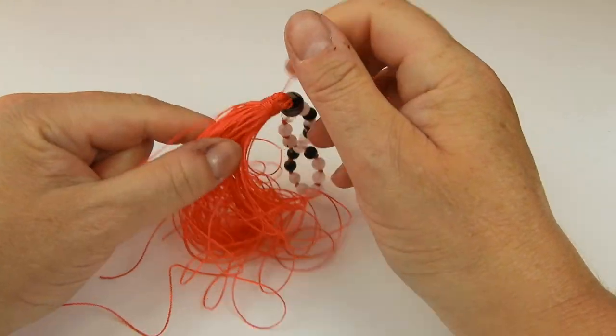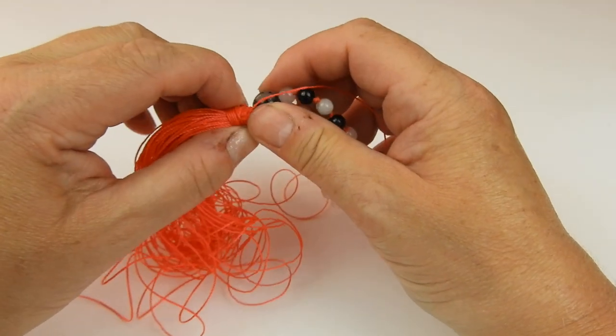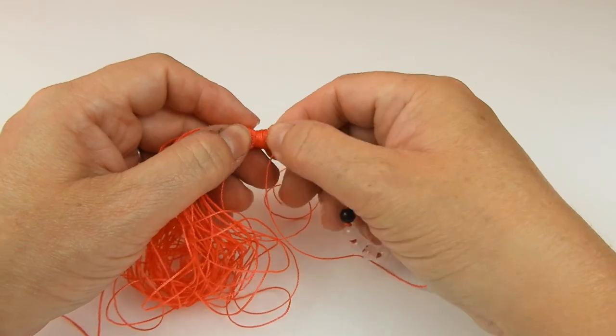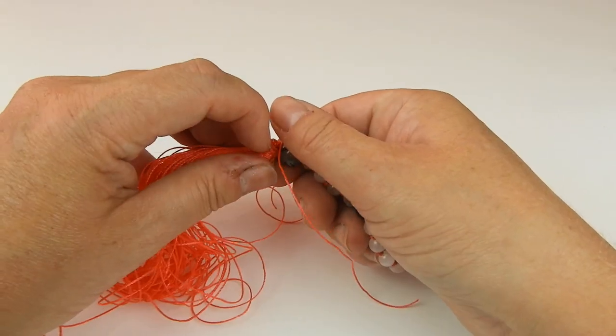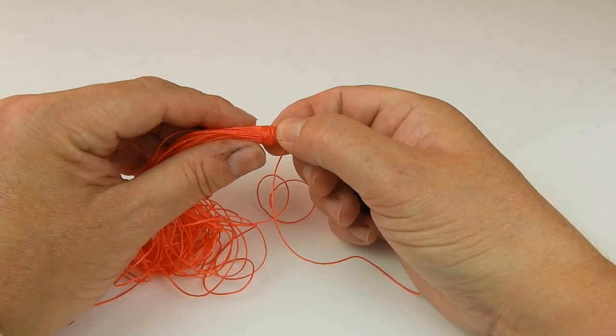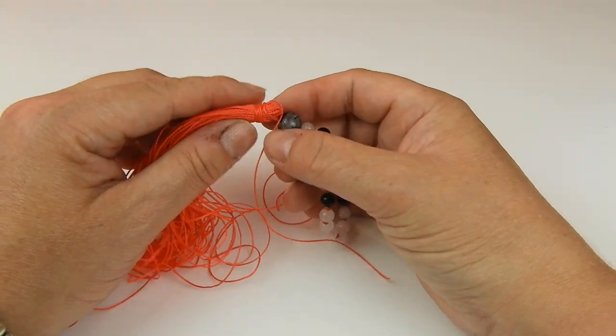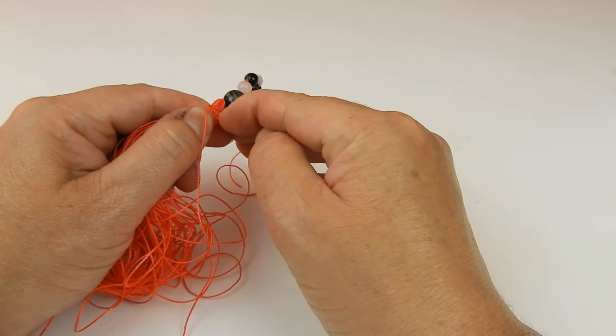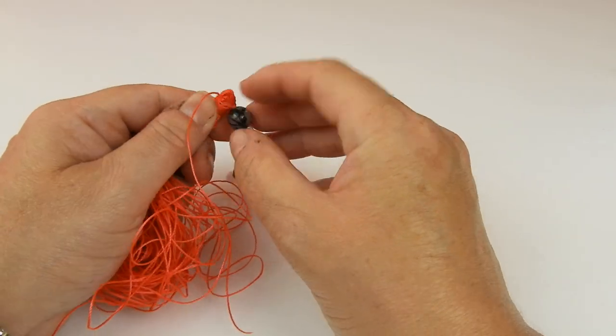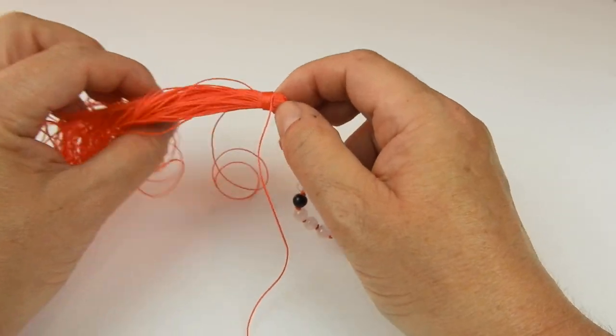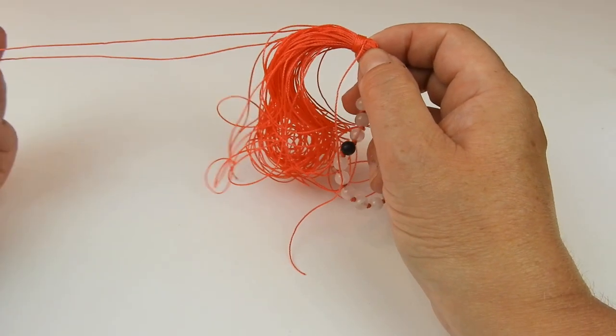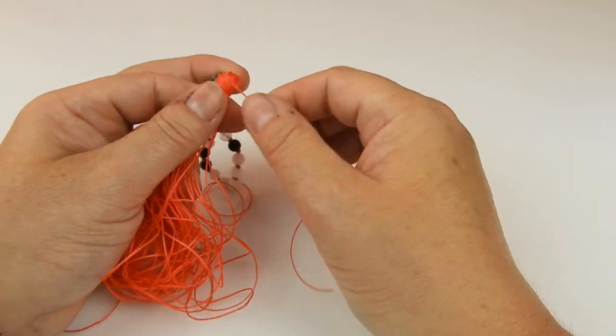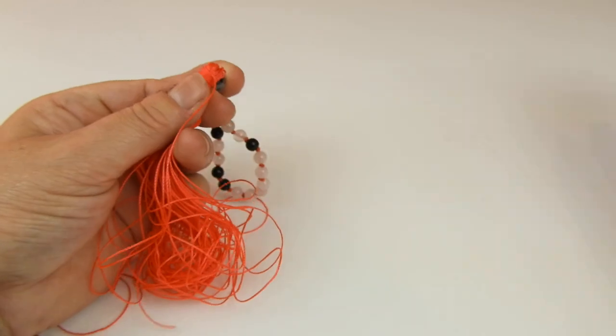That now has secured that tassel in place. You can spend a little bit of time making sure that everything's neat and tidy, that nothing's gone out of place. You've now got that little waist where it needs to be. If you want to do it again, at this point you can. You can undo that and start it again. But the piece with the knot in it now has gone into the actual tassel itself. The only thing that we need to get rid of is this part here.